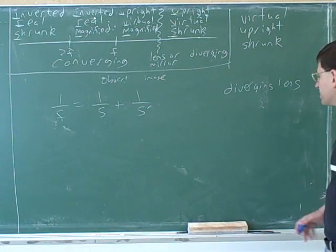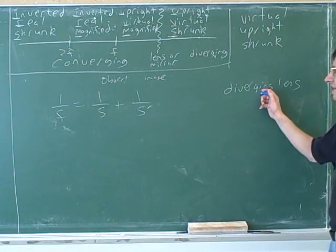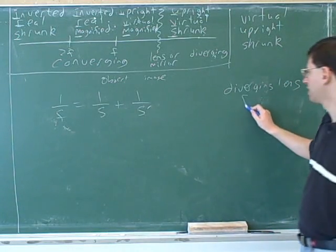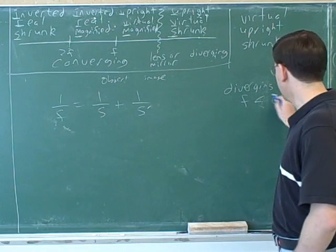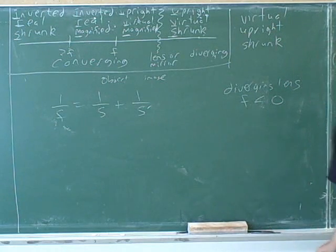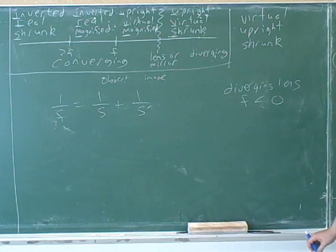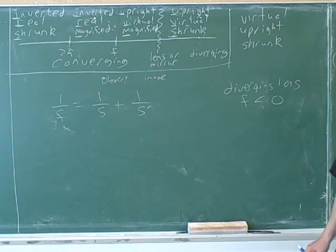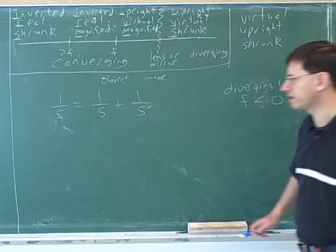Something we learned in our earlier session is that diverging lenses have negative focal lengths. If it was a converging lens, it would have a positive focal length. As soon as you see something is diverging, you know it's a negative focal length, and when you see it's converging, you know it's a positive focal length.